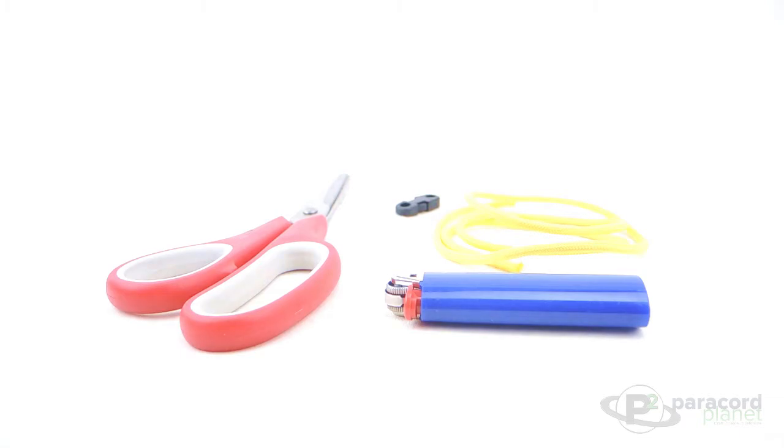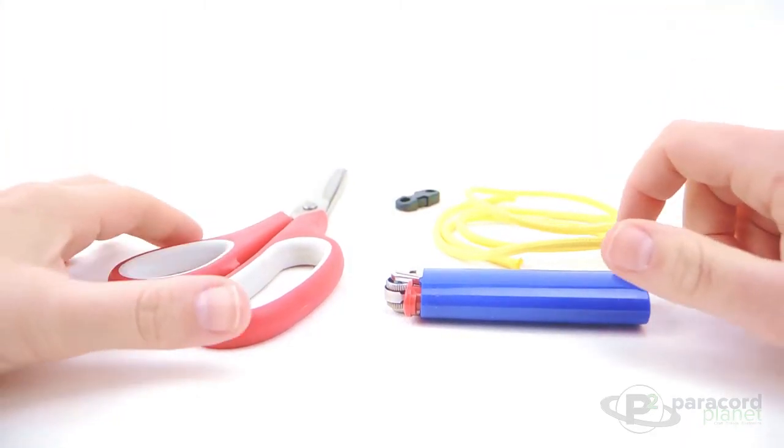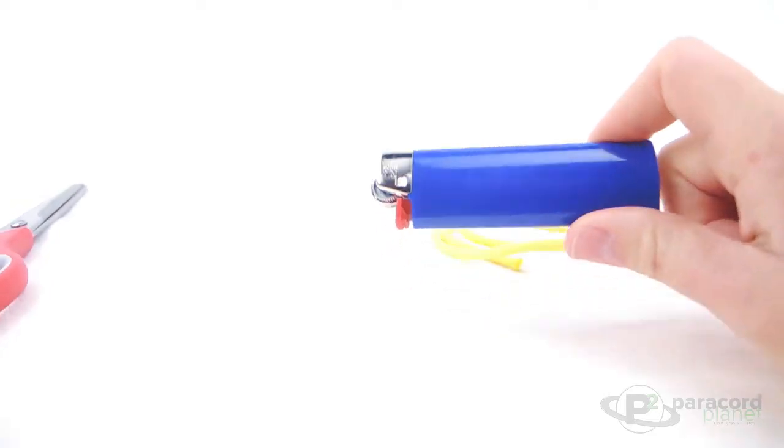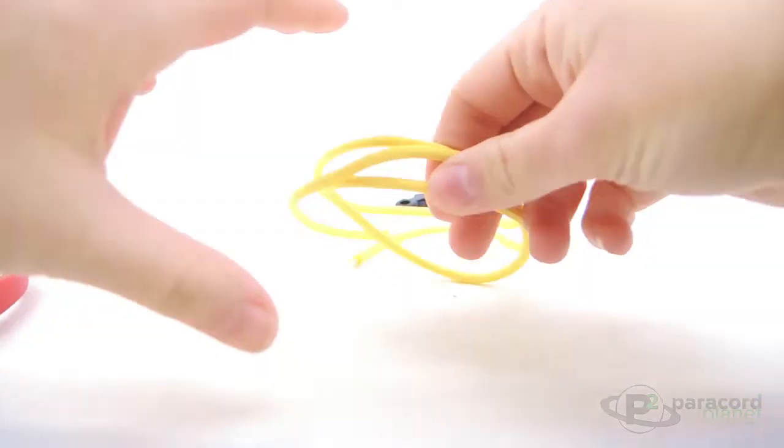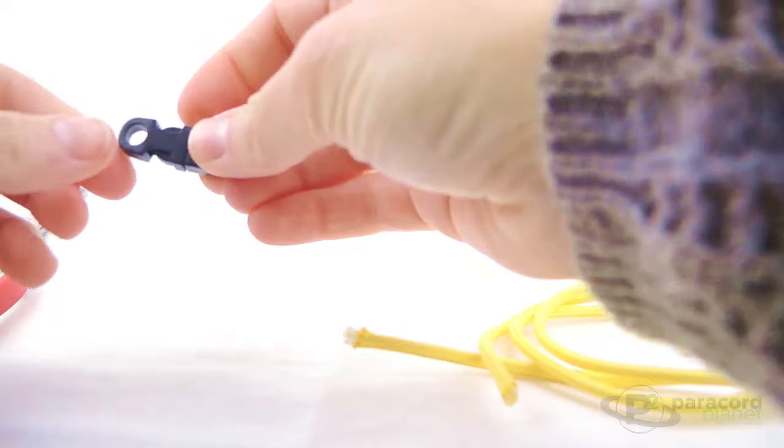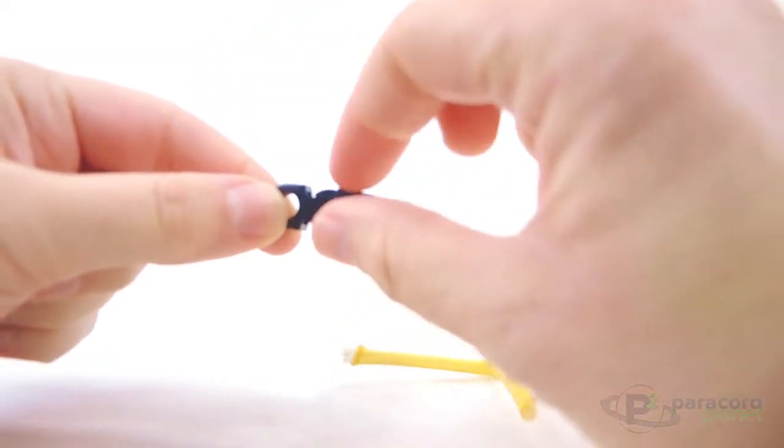For this video I am going to demonstrate how to do the easy adjustable bracelet. For starters I have my scissors, lighter, about two feet of cord, and our breakaway clasp.